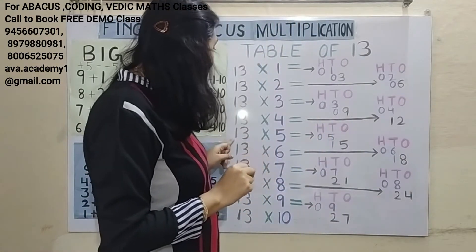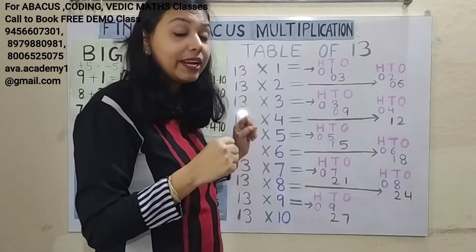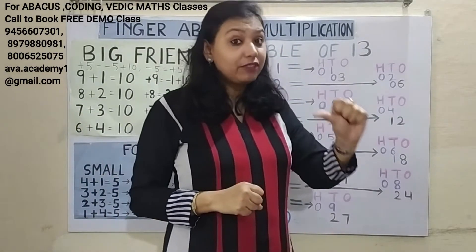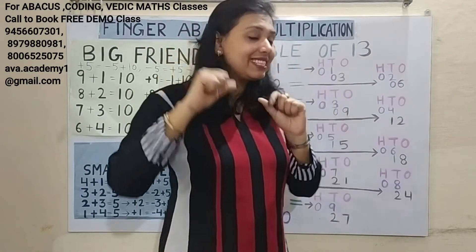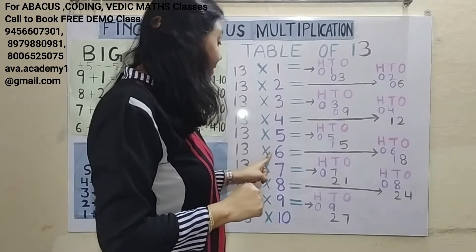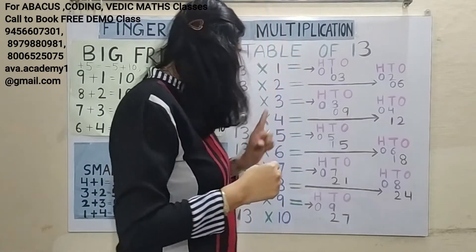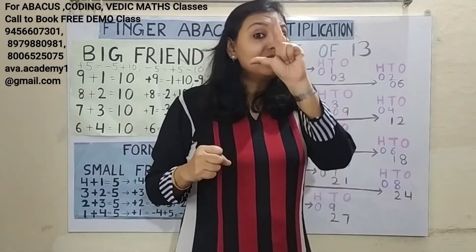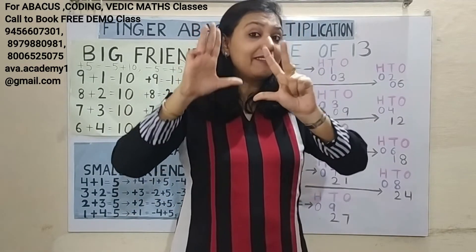Next, 13 fives: 1 five is 5. In 100s: 0. In 10s: 5. 3 fives are 15. In 10s: 1. In 1s: 5. Answer is 65. Next, 13 sixes: 1 six is 6. In 100s: 0. In 10s: 6. 3 sixes are 18. In 10s: 1. In 1s: 8. Answer is 78.